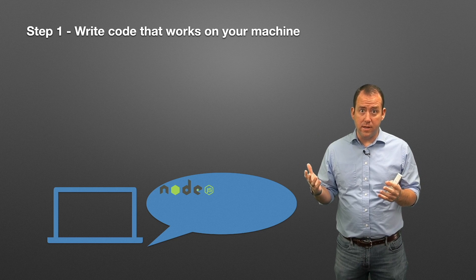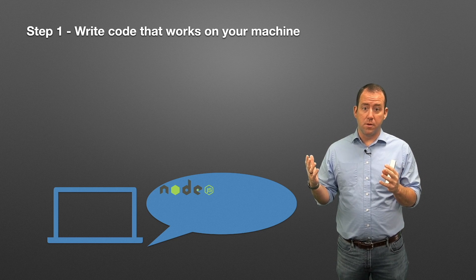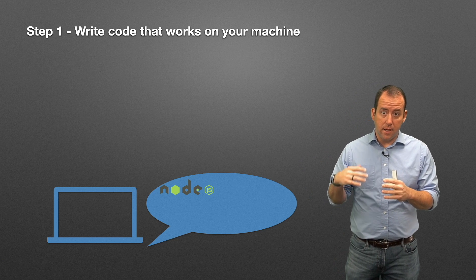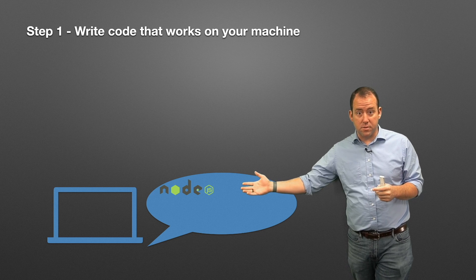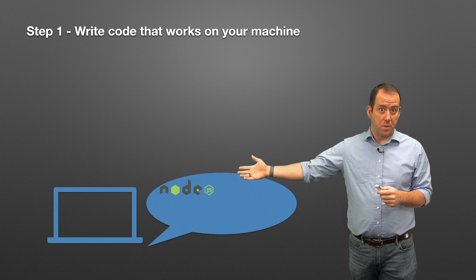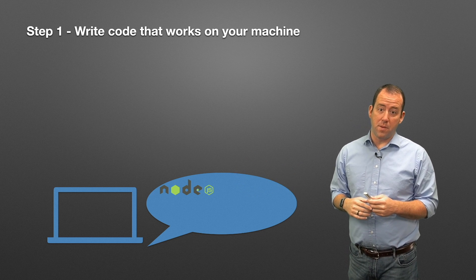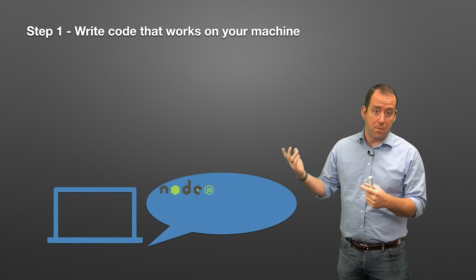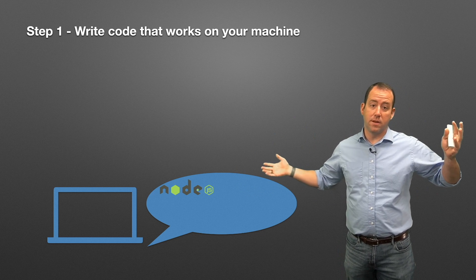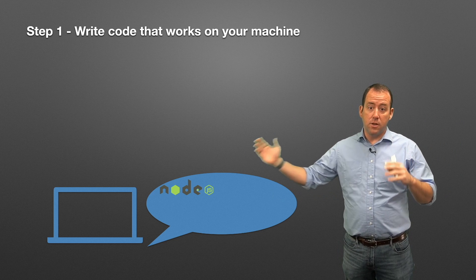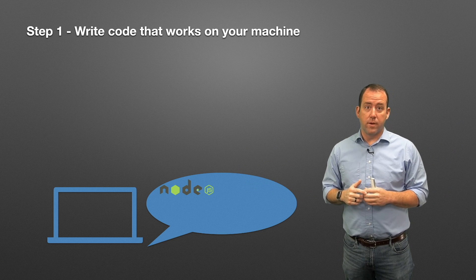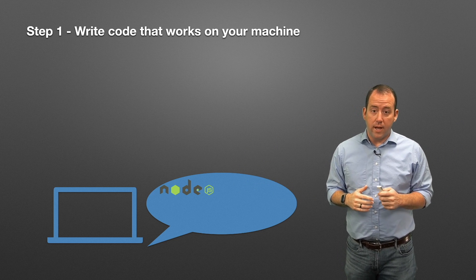The first thing you need to do is write code that works on your machine. That typically involves writing in some sort of programming language — it might be Node.js, it might be Python, it might be C#. It doesn't matter what programming language it is. You've got to write your code.